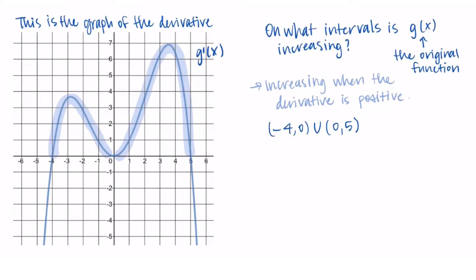We don't include the point 0 here because at 0, the output of the derivative is equal to 0. This means that 0 corresponds to a critical point, so it's not a place where the function g is increasing or decreasing. So we don't include it in our answer about where the function is increasing, and we won't include it when we ask about decreasing either.